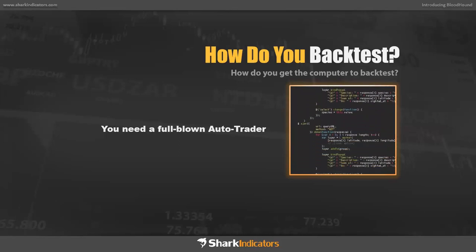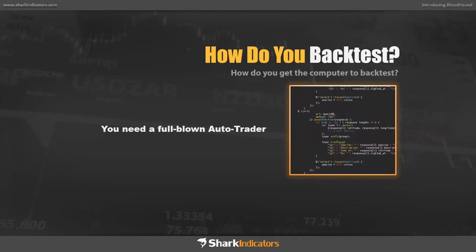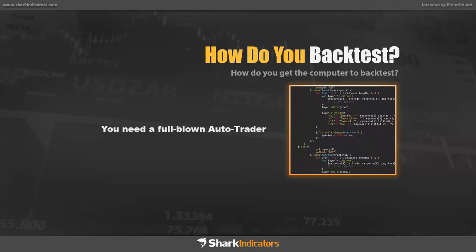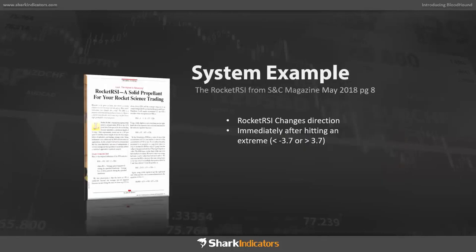That's kind of where we come in. We have two products called Bloodhound and Blackbird. What we're going to demonstrate today is how to build an auto trader so that you can use it to backtest — and we're going to do it within about 15 to 20 minutes. We're going to build an auto trader from scratch, do some analysis, and run through a backtest. To do that, we need a system example to work from. We're not specifically condoning this particular system — we just need something concrete to work from.